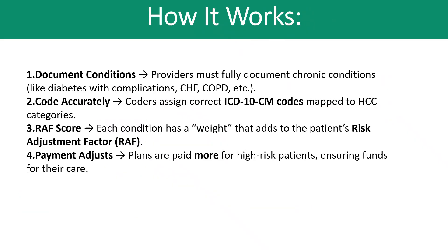How does it work? Coders review the documentation, and it is the provider's duty to fully document chronic conditions — everything the patient is suffering from should be listed in the medical record. We must code very accurately, as there are many coding guidelines associated with HCC that we will cover later. We also need to calculate the RAF score — Risk Adjustment Factor. We have tools to help with this. Plans are paid more for high-risk patients, ensuring funds for their care, and we have various payment models including CMS and HCC payment models.